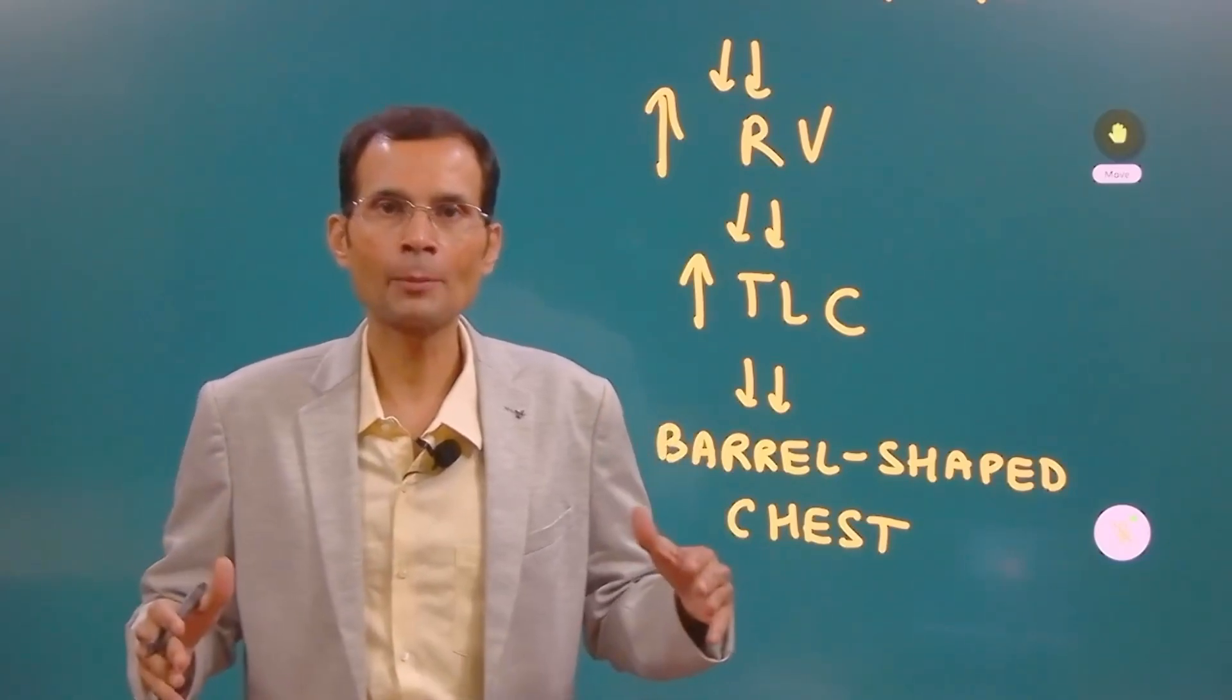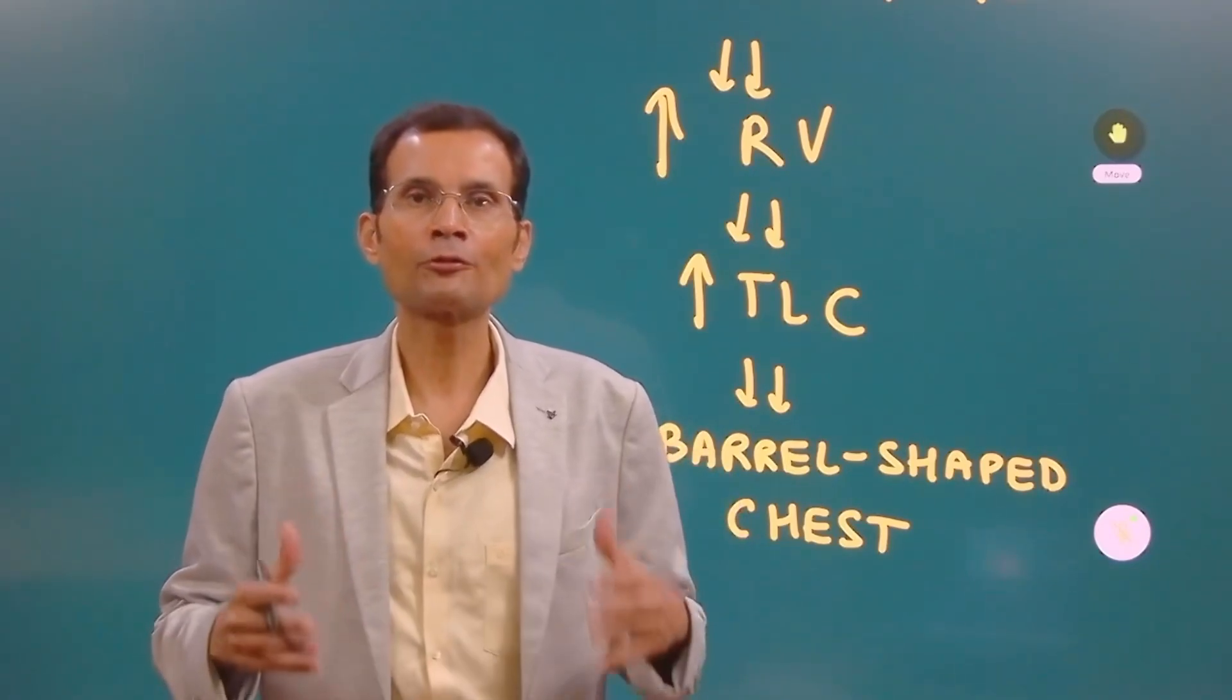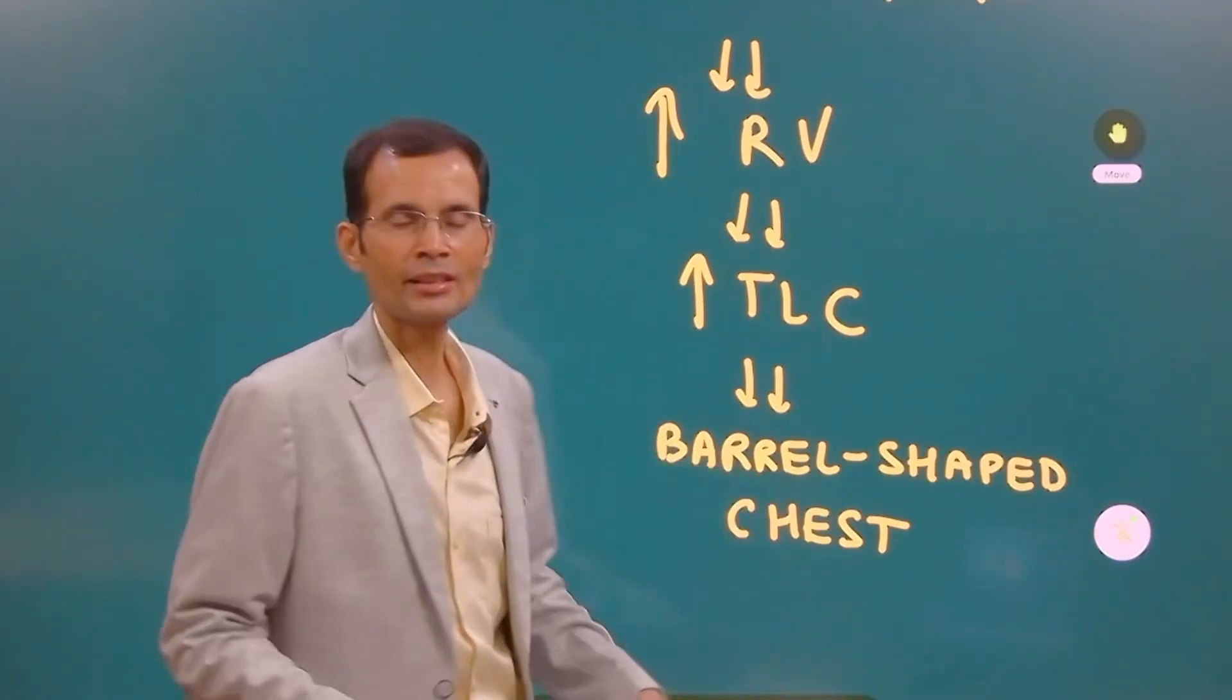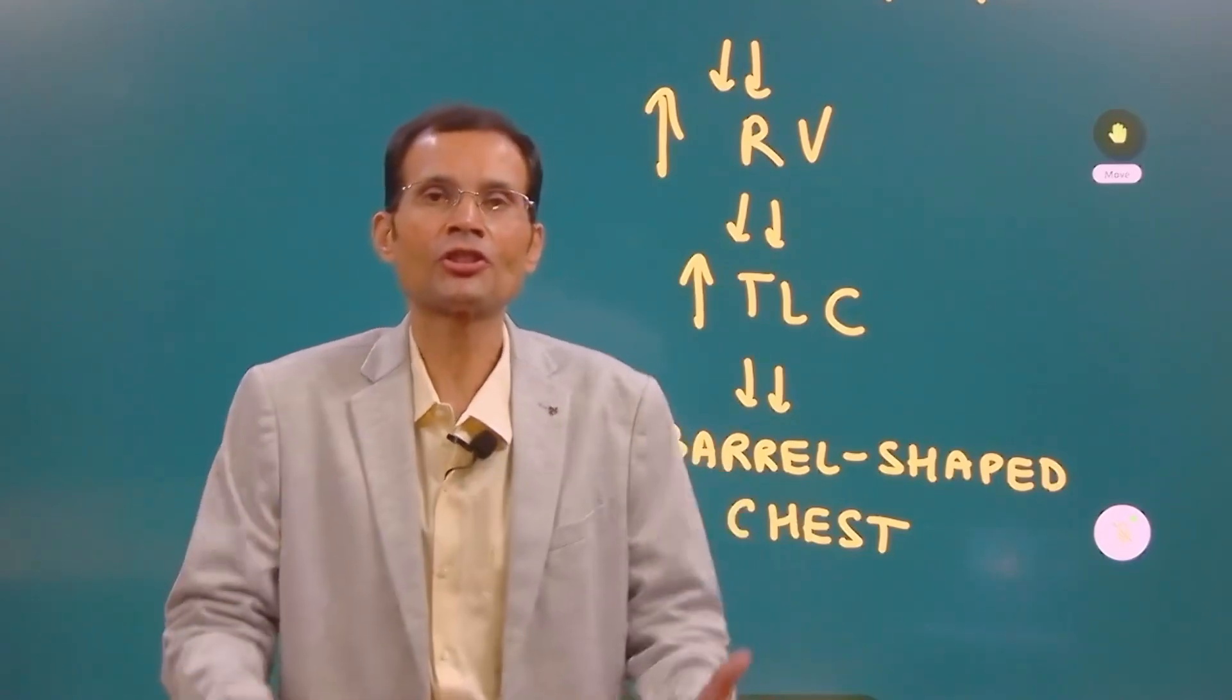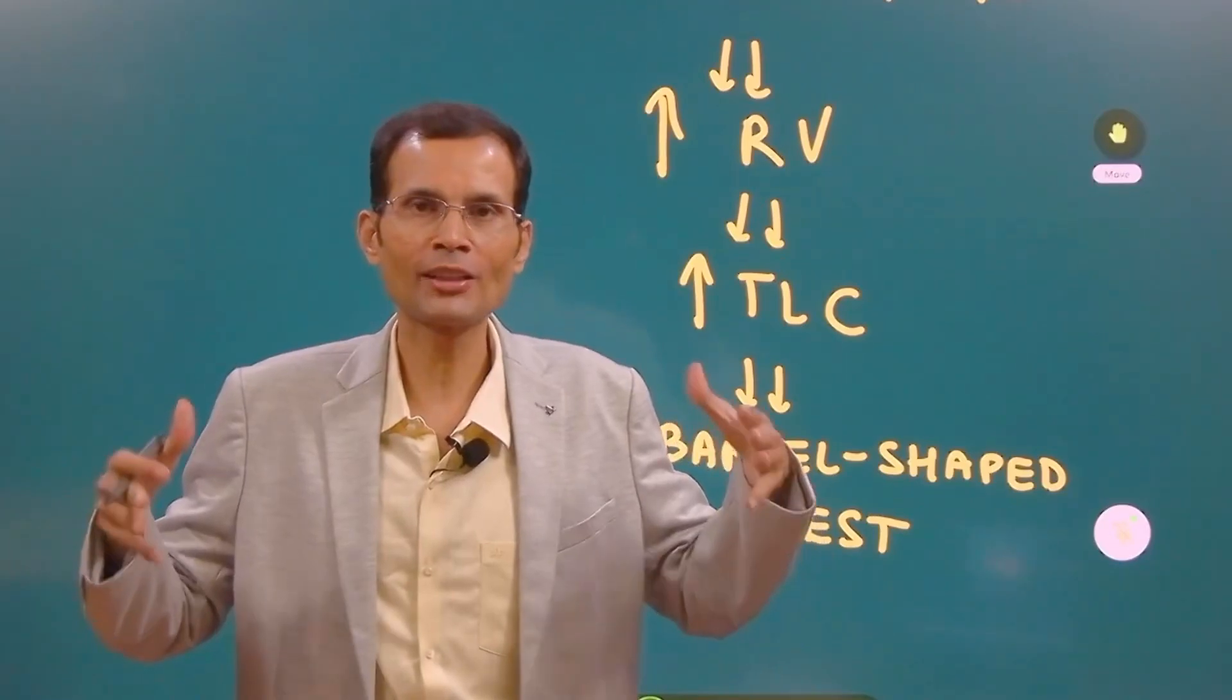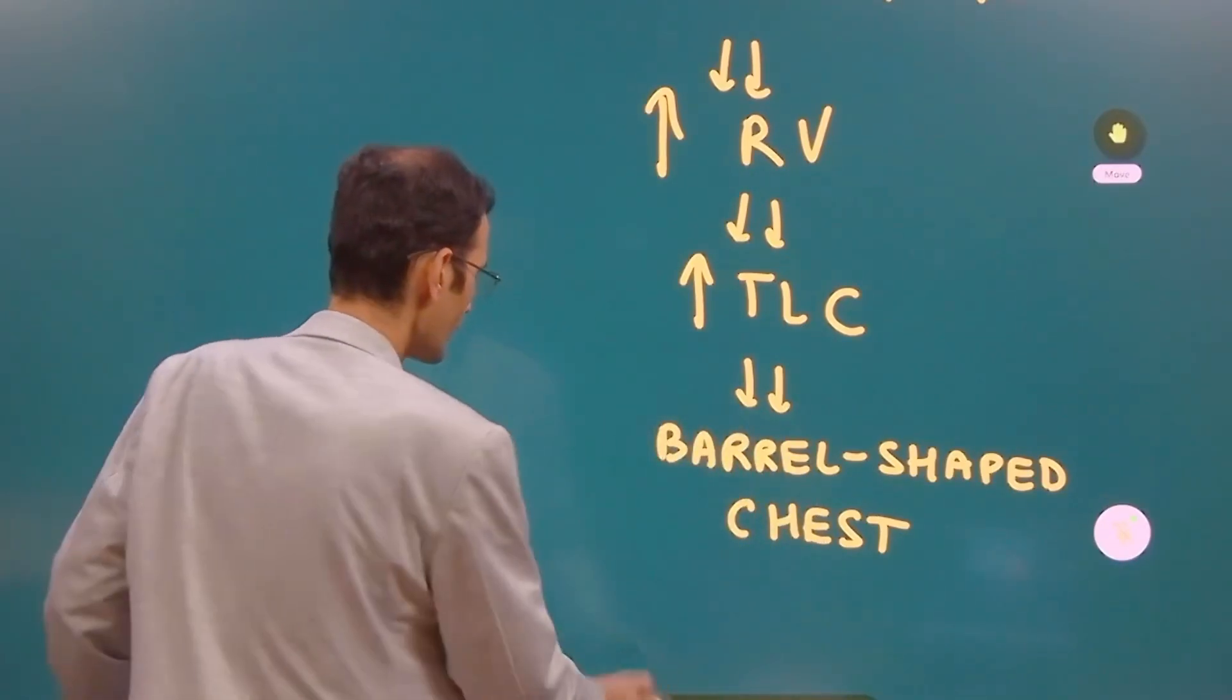Now you imagine that the lung capacity overall, total lung capacity, is increasing and therefore gradually slowly over a period of time it results in a changed shape of the chest. The shape, I mean because of the over distension of the lungs, the barrel shaped chest is the result.